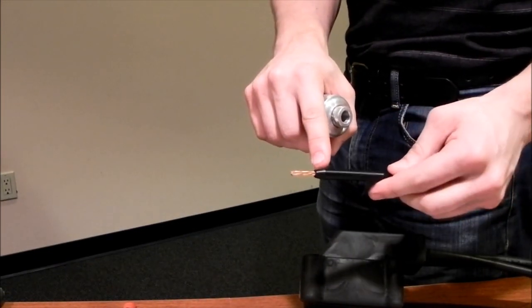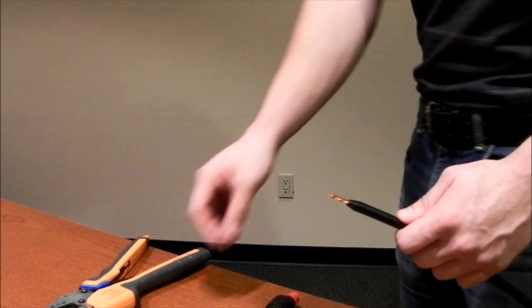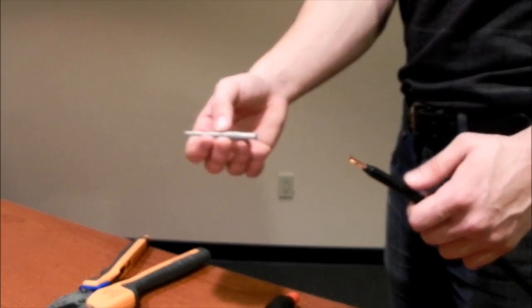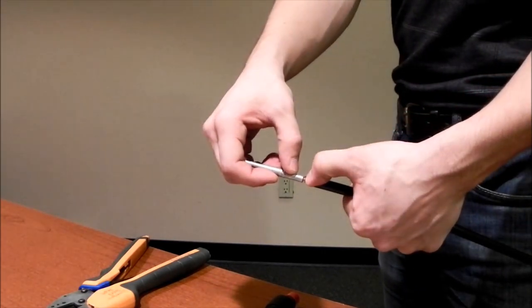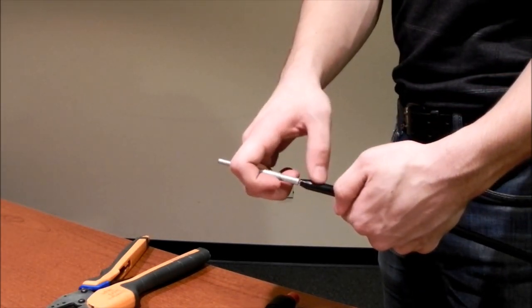The end result is a fully penciled jacket. Now take your contact, this is the male, and slide it as far onto the conductor as possible. You should see a small amount of copper wire between the contact and the jacket.